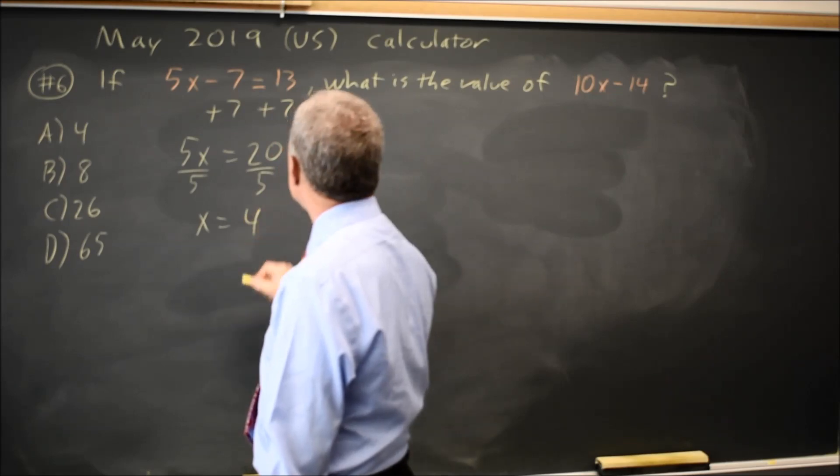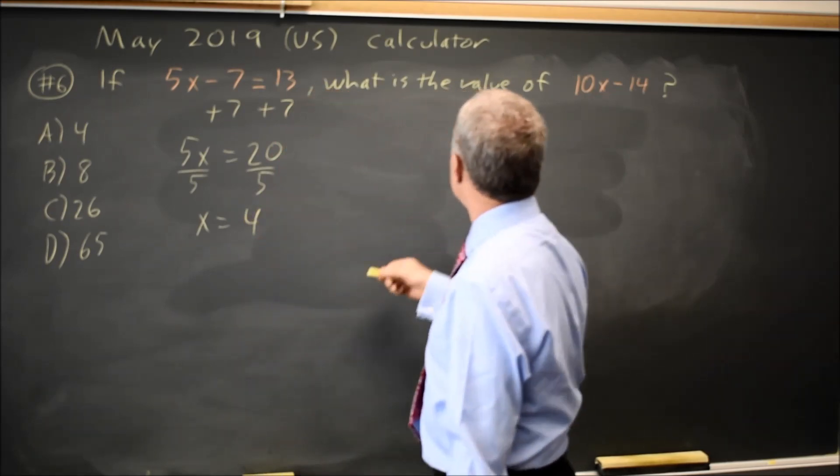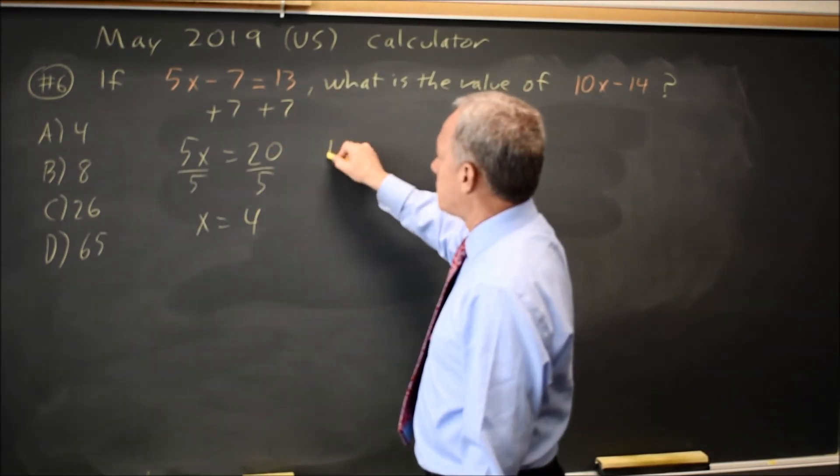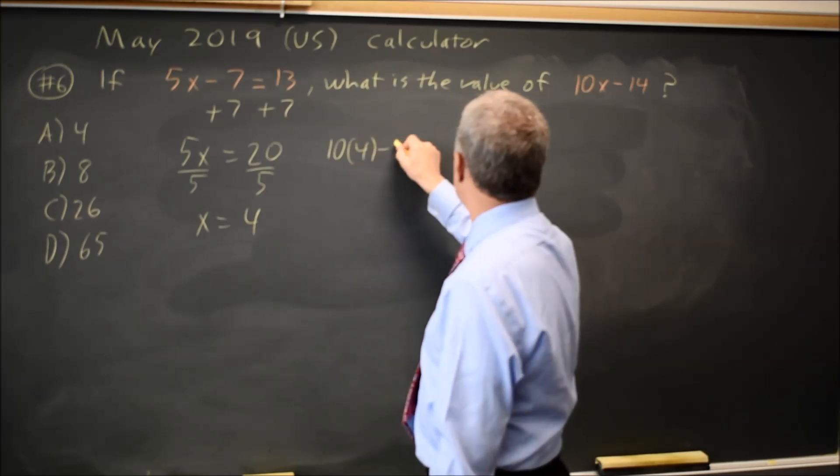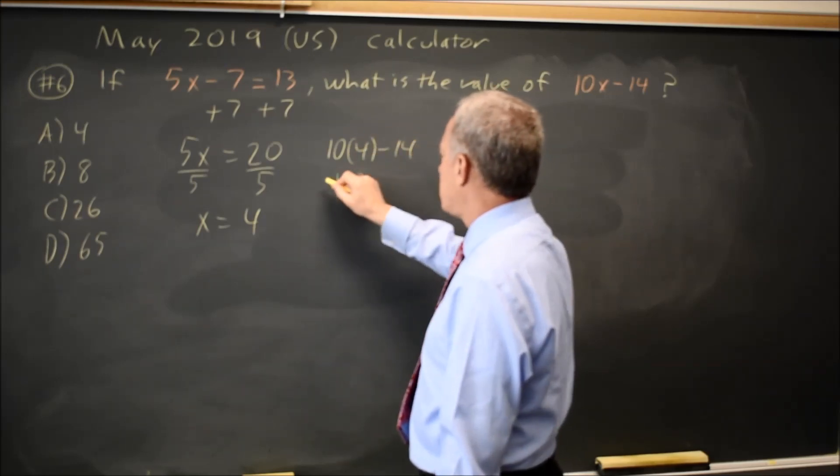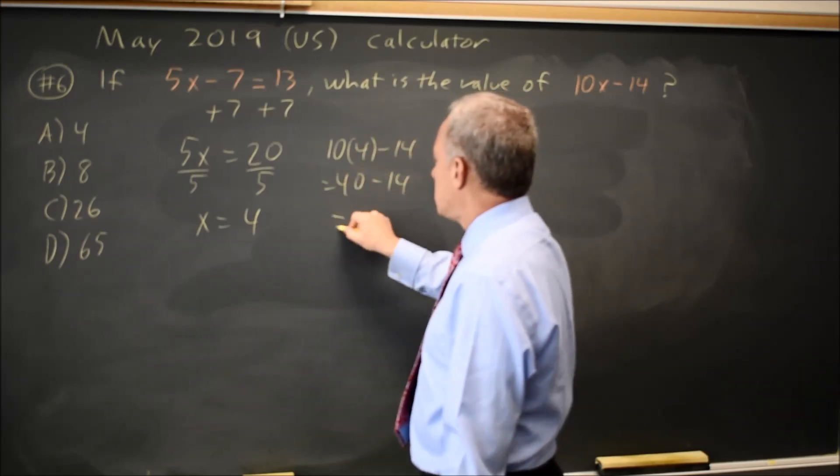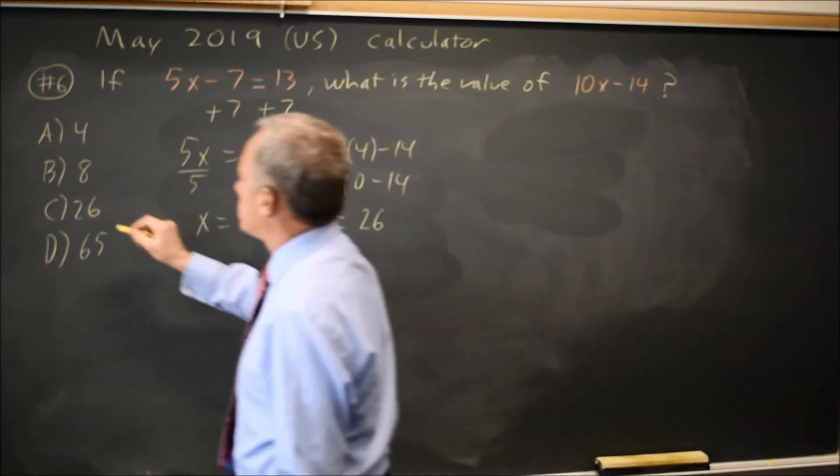x equals 20 over 5 equals 4. Now I can substitute 4 in for x in the expression, 10 times 4 minus 14, which is 40 minus 14, which equals 26. That would be choice C.